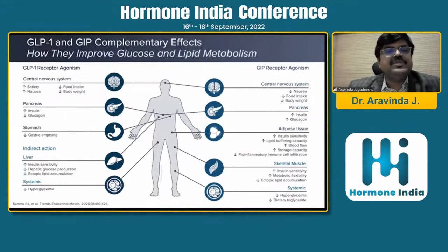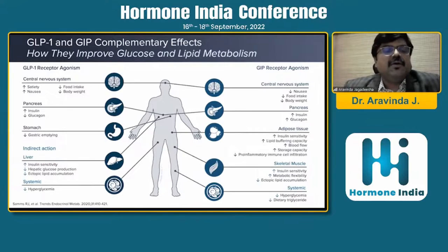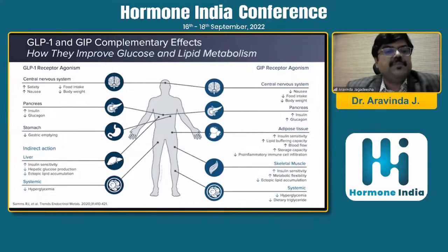This is an interesting slide giving the overall picture of GLP-1 and GIP and their complementary effects on glucose and lipid metabolism. On the left-hand side, the GLP-1 receptor agonist acts on the central nervous system, increasing satiety, causing nausea, decreasing food intake and body weight. In the pancreas, it increases insulin and decreases glucagon. In the stomach, it decreases gastric emptying time. In the liver, it increases insulin sensitivity, decreases hepatic glucose production, and decreases ectopic lipid accumulation.